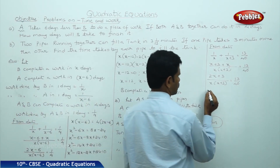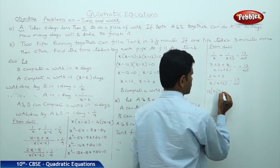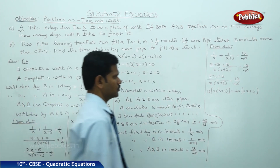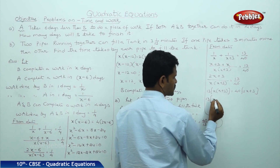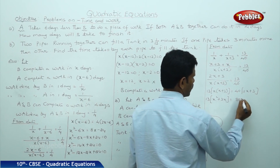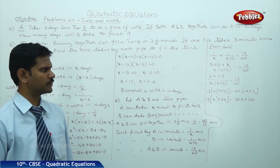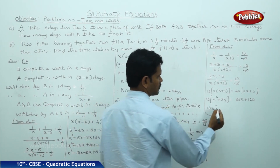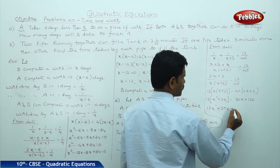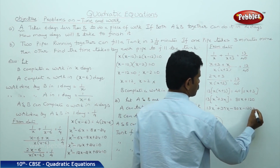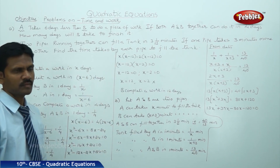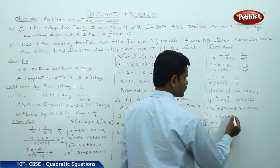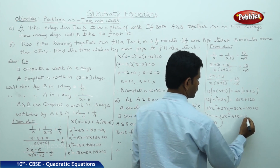Cross multiplying: 40 into 2X plus 3 is equal to 13 times X into X plus 3. Opening the brackets: 13X squared minus 41X minus 120 equals 0.